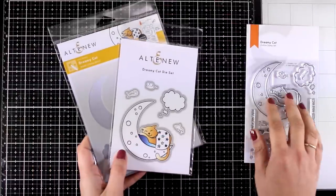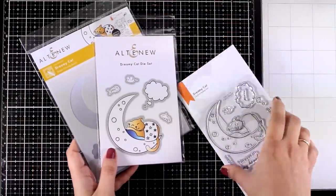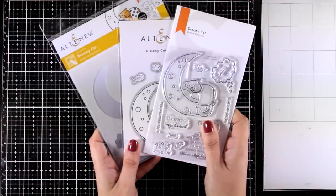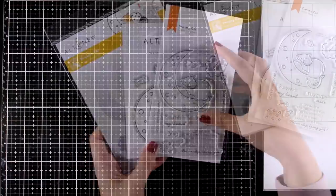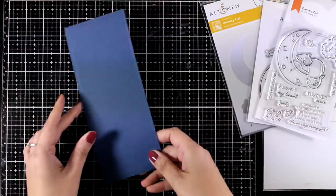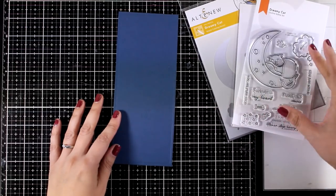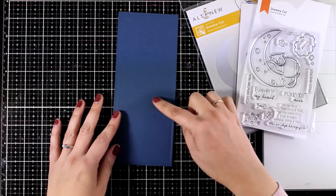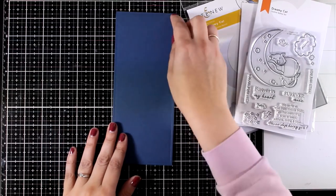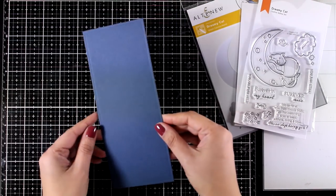A really unique design which features an adorable cat that I cannot resist and it is called Dreamy Cat. Now the cat on the moon would make a perfect focal point for a standard A2 size card but it would also work on a slimline card and the idea is to extend the design somehow by having dangling stars coming down from the moon.